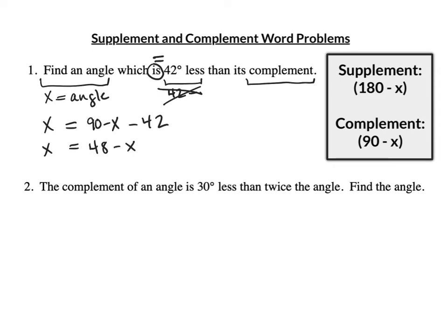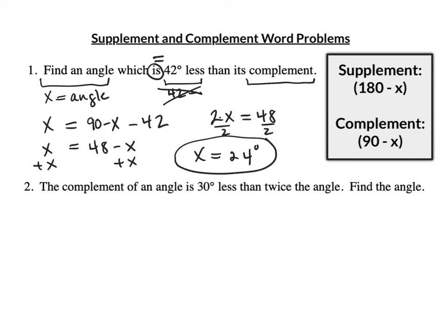Now I have an x on both sides. The easy way to get rid of one of them would be to get rid of the one on the right. I'll get rid of a minus x by adding x — I always like to add if I can. And I get 2x equals 48. Dividing both sides by 2, I get x equals 24. So my angle is 24 degrees.